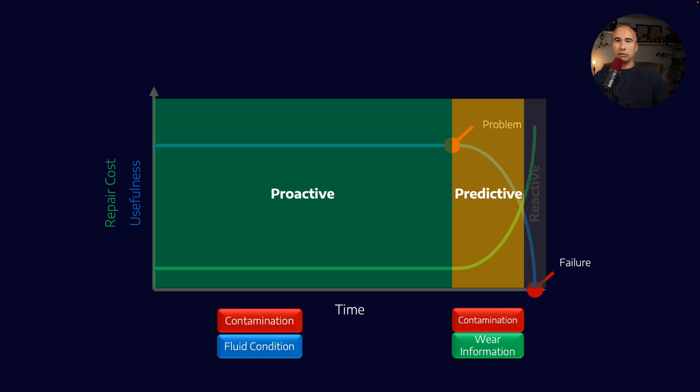So for example, with proactive, we're trying to eliminate some of the root causes of machine failure. Some of the root causes might include contamination. So if we can measure the amount of contamination that is in our oil system, then we can intervene. We can clean up that contamination and we can prevent the failure from happening in the first place. So that's an example of something that's in the proactive domain.